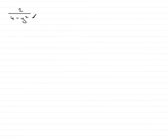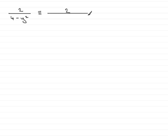In this part of the question we're asked to write the fraction 2 over 4 minus y squared in partial fractions. The first thing I need to do is factorize the denominator. This is the difference of two squares — 2 squared minus y squared — so the denominator factorizes into two linear factors: 2 minus y, multiplied by 2 plus y.